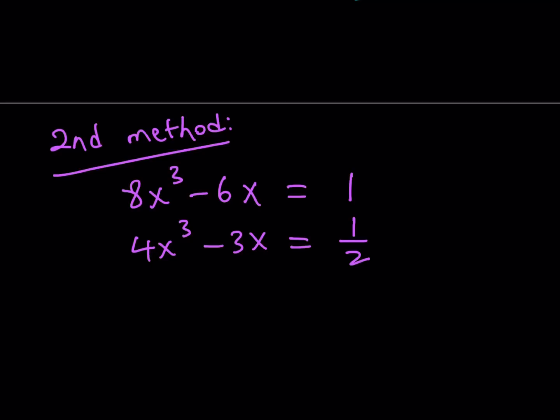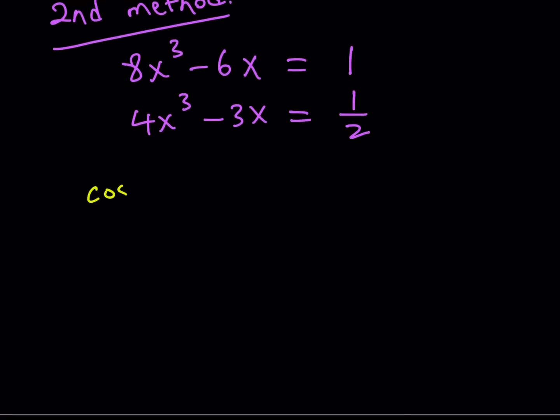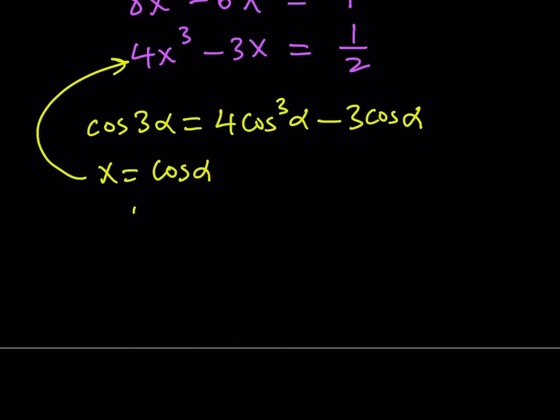Because what does the left-hand side look like? 4x³ - 3x. What does that 4 and the 3 tell you? It should tell you the triple angle formula. Why? Because we do know, or we should know that, this is definitely a must if you're dealing with trigonometry especially. Cosine of 3α can be written as 4cos³α - 3cosα. There you go. You got it. So, if I replace x with cosα in this equation right here, then I should be getting something like 4cos³α - 3cosα = 1/2.